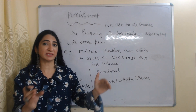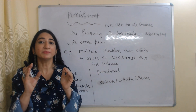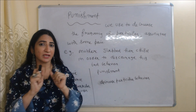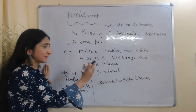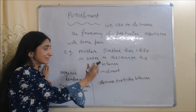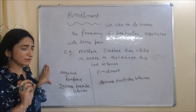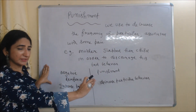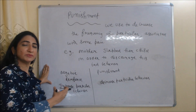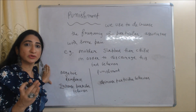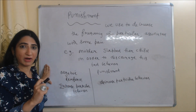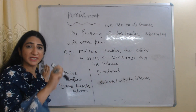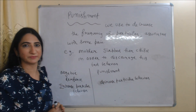Punishment is always associated with some pain. For example, a mother slapped her child in order to discourage his bad behavior. Don't confuse negative reinforcement and punishment: negative reinforcement means we increase a particular behavior to avoid a negative outcome, whereas in punishment we decrease a particular behavior.